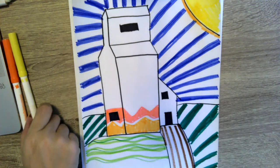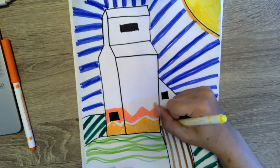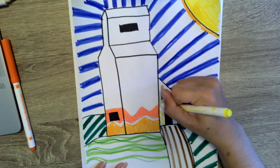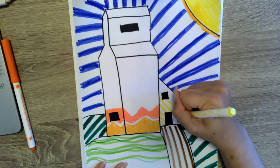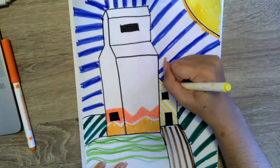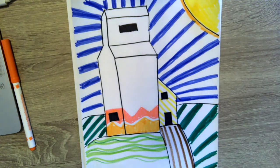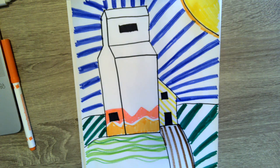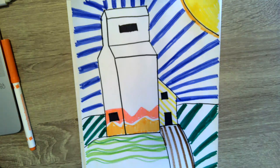And then of course on the little shed or the house over here on the side, they just did some diagonal lines in yellow. But I can't wait to see your creativity. Have fun everyone.